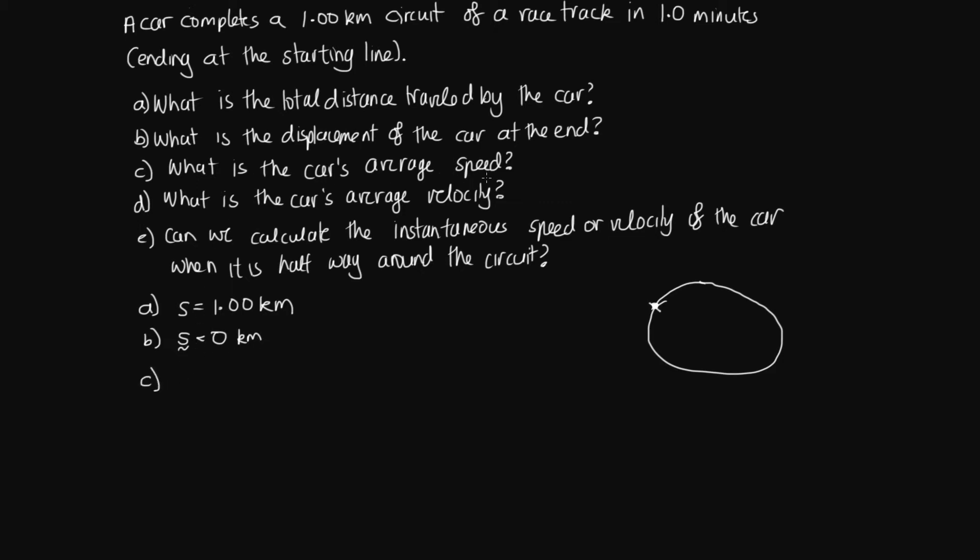Okay, C, what is the car's average speed? So the average speed is equal to the distance over the time. So the distance it's travelled is 1km. So we can write this as 1000 metres and the time it took was 1 minute. So we can write 1 minute as 60 seconds just to convert from minutes into SI units.